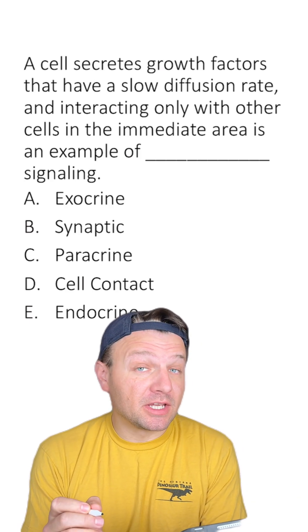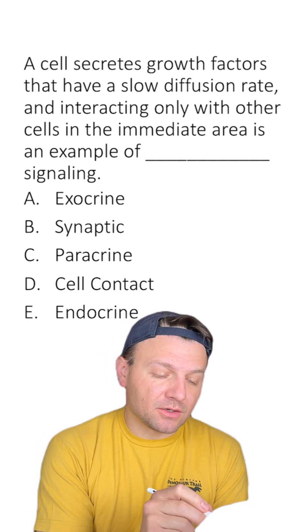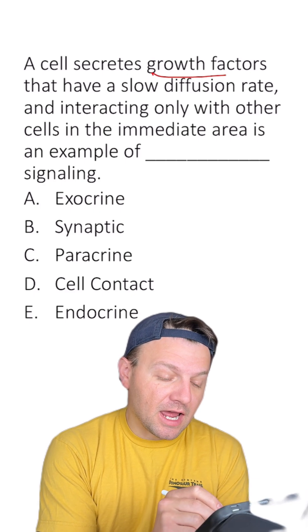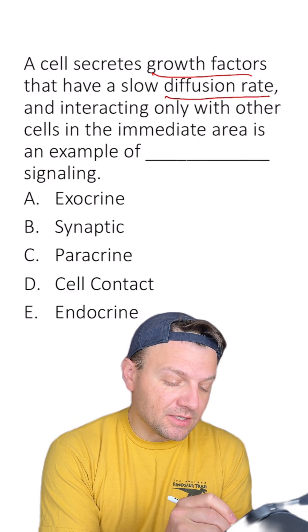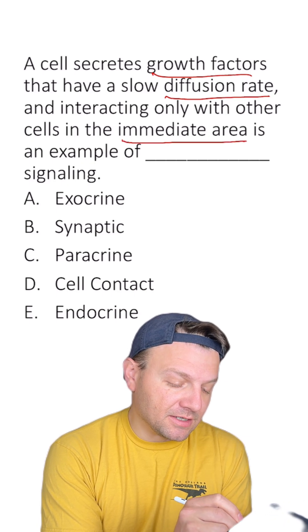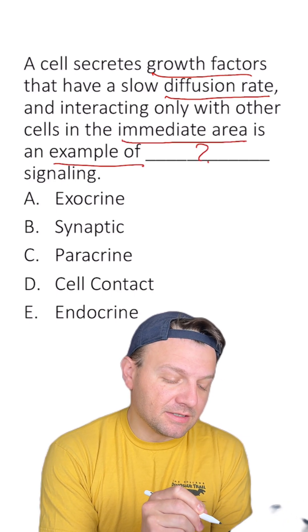Let's go over this multiple choice question about cell communication together. A cell secretes growth factors that have a slow diffusion rate and interacting only with other cells in the immediate area is an example of blank signaling.